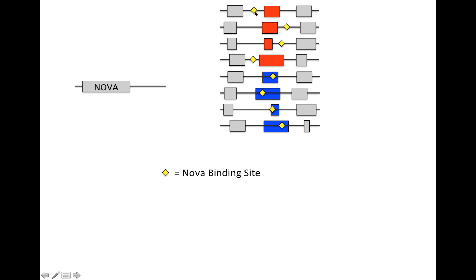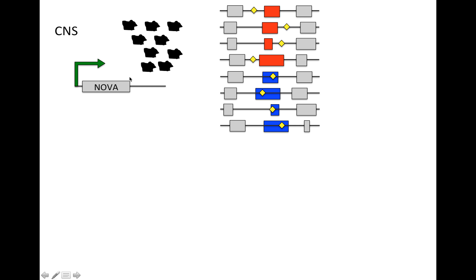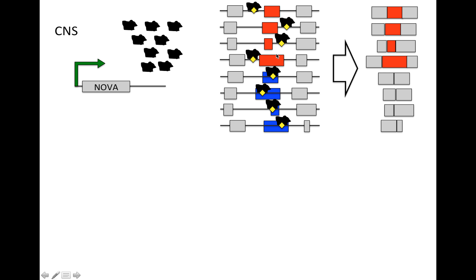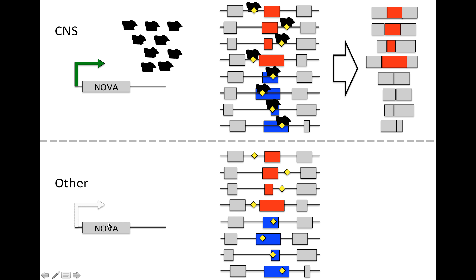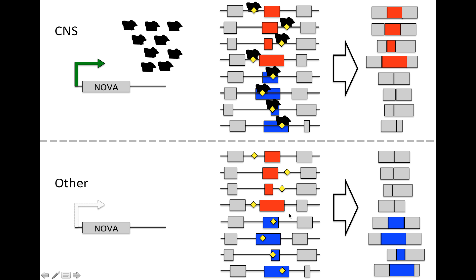Let's put this all together. The yellow indicates NOVA binding sites, and the alternatively spliced exons are shown across eight different genes. In the central nervous system, the NOVA gene is expressed, NOVA proteins bind to these transcripts, and for some — colored red — that leads to inclusion, with exons more likely to be included. For others — in blue, where NOVA binds on top of the exon — that leads to exclusion. So in the CNS we end up with these eight genes expressing these eight transcripts. In other tissues, we don't have expression of NOVA, so the red exons will be less likely to be included and the blue exons more likely to be included. Expression of NOVA in this CNS-specific way has allowed differentiation — from the same eight genes — to make different proteins in different tissues.